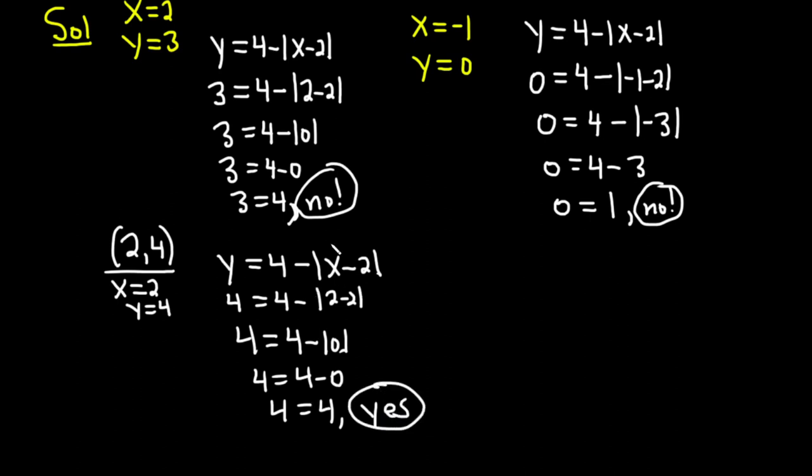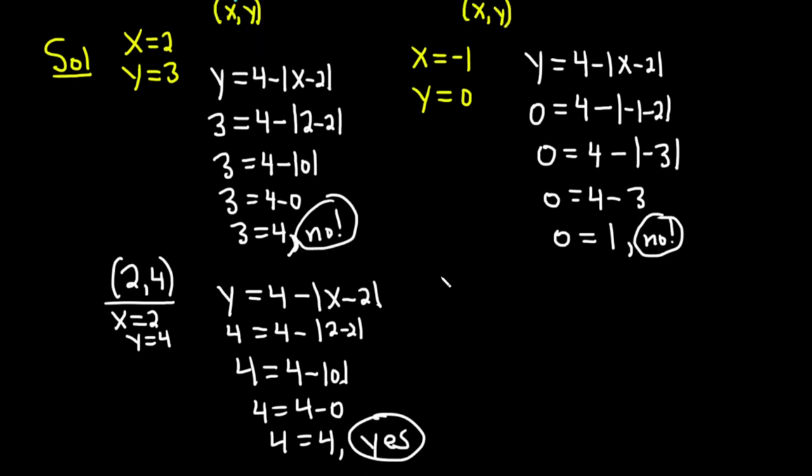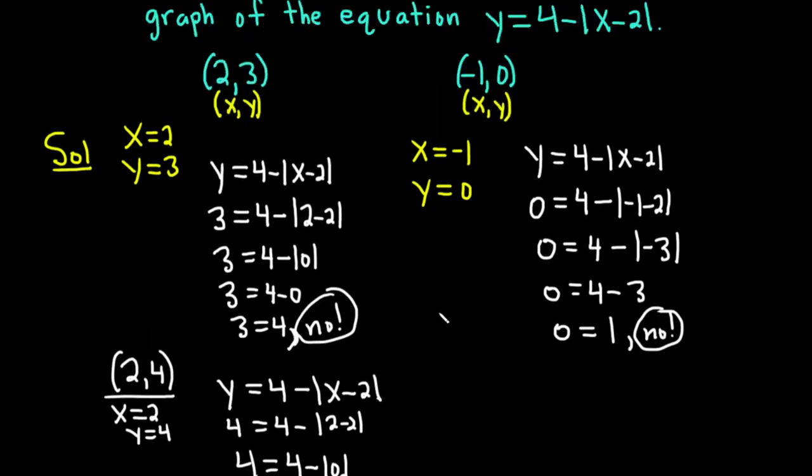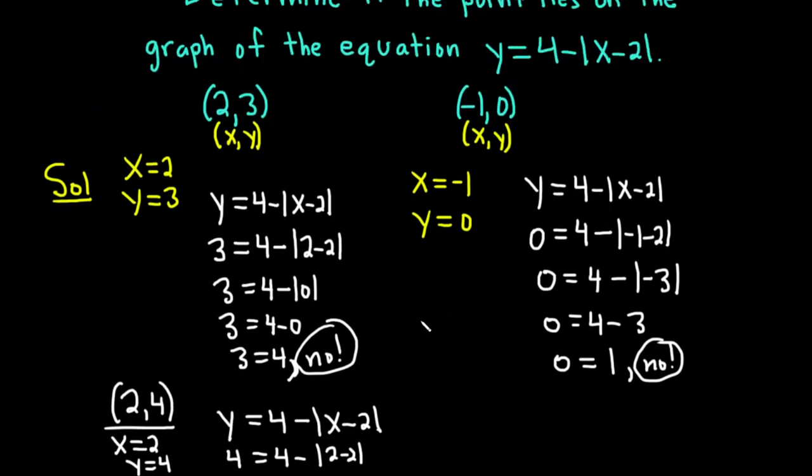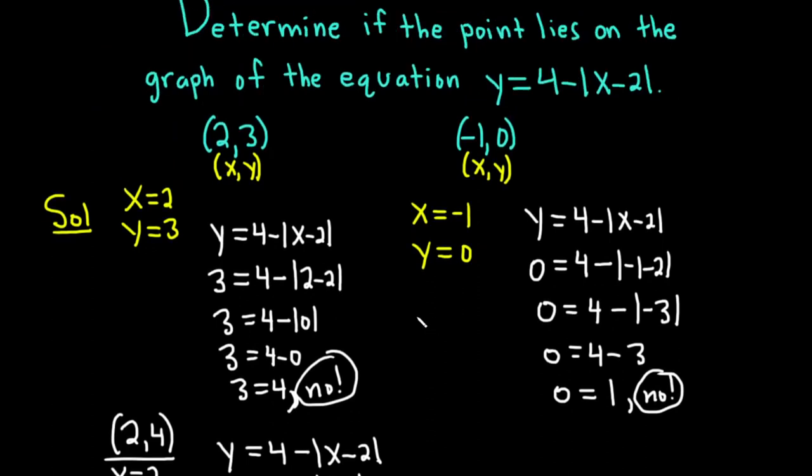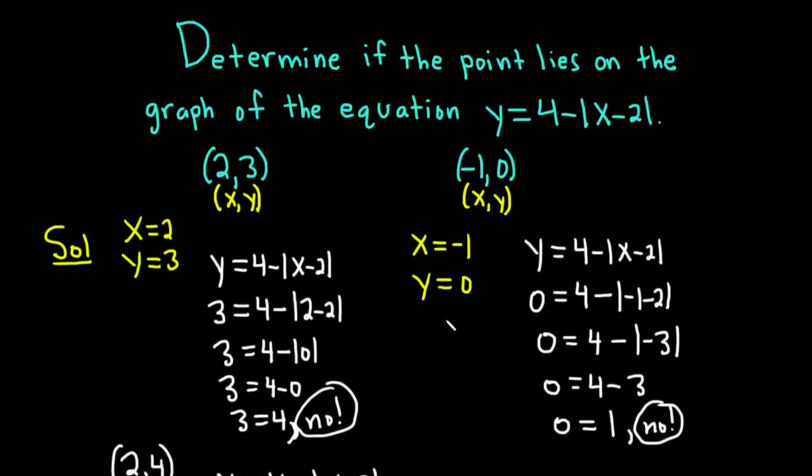So whenever you have an equation and you're trying to determine if a point lies in the equation, all you have to do is plug in that point and if the result is true, then you know it does. If the result is false, you know it doesn't. This is also useful in cases where you know already that the point lies on the equation. Then you know that when you plug it in, it has to be true. And that's really another way that this is used.